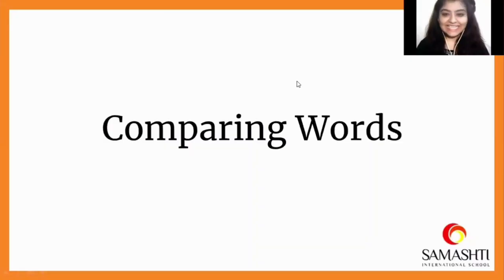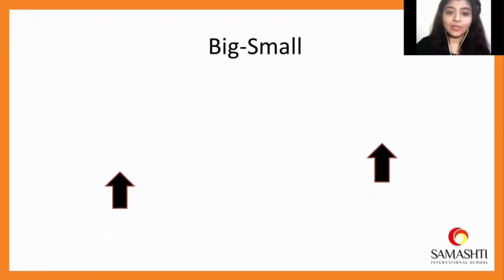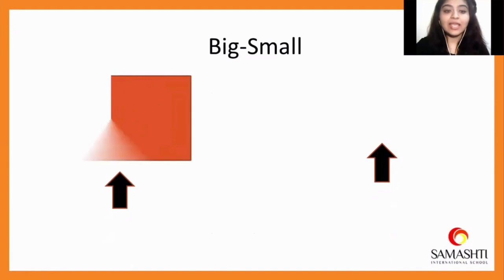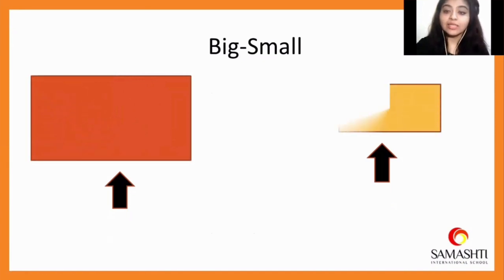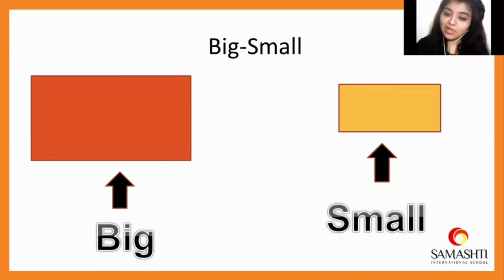Let's understand comparing words better with some more examples. Big, small. So here we have one red rectangle and one yellow rectangle. The red rectangle is big and the yellow rectangle is small.